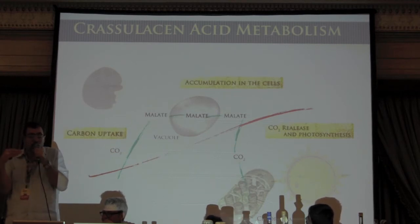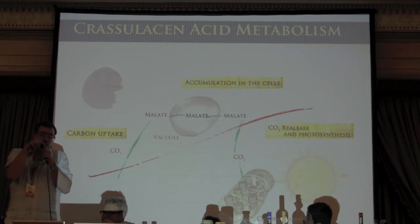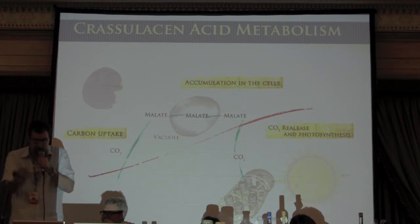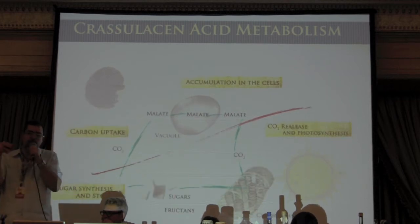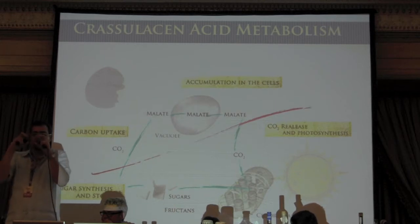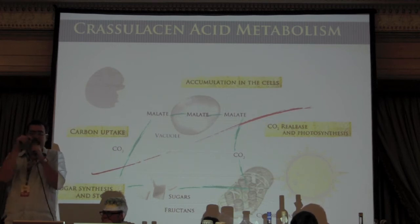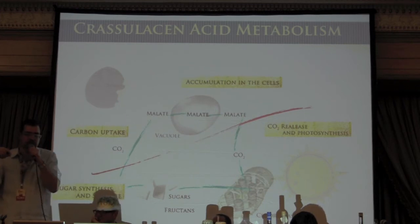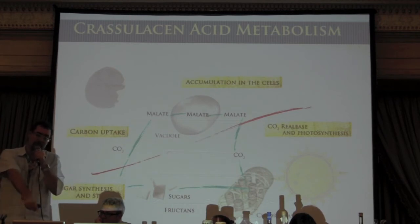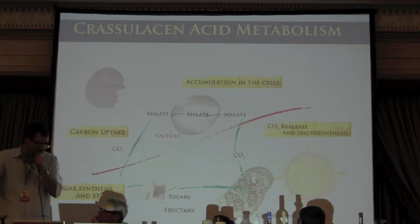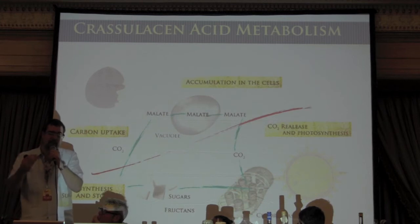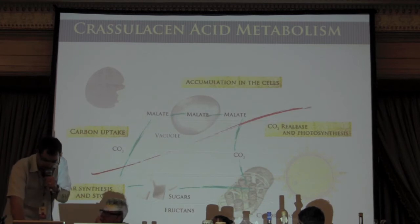They accumulate the CO2 in a molecule called malate. Then, when daylight arrives, they close, and the malate re-transforms into CO2. Using the normal photosynthesis pathway — coupling the energy of a photon with a CO2 molecule, breaking the CO2, taking the oxygen out, keeping the carbon — the agave builds sugars in the same way, but avoids the water-loss problem. Those CO2 molecules are then transformed into very special sugars.